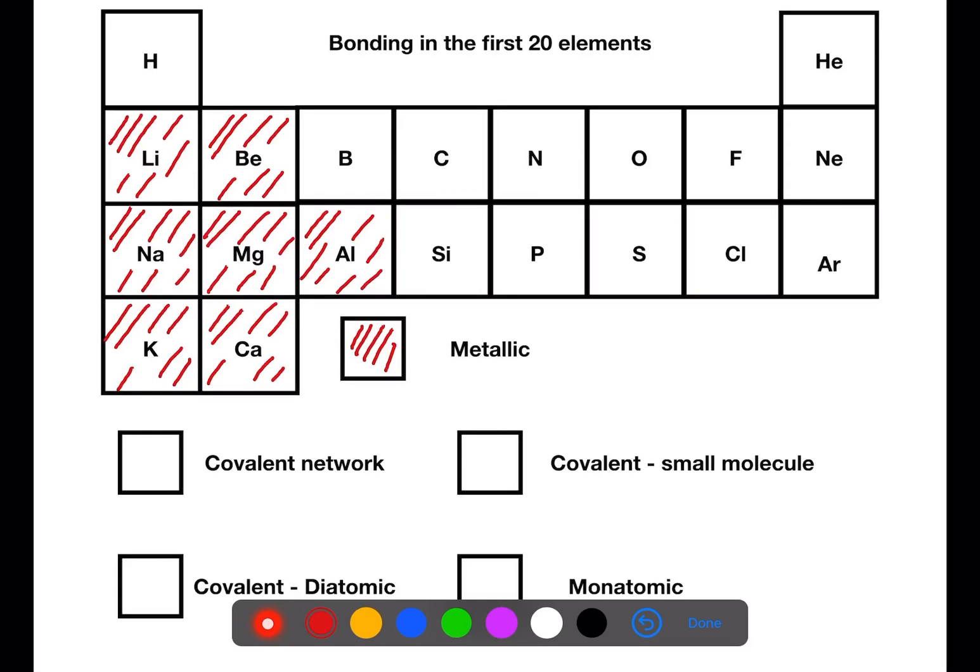Let's now look at the covalent networks. We'll shade the covalent networks in yellow. We have three covalent networks. Boron, carbon and silicon. For carbon there are two possible network structures. Graphite or diamond.